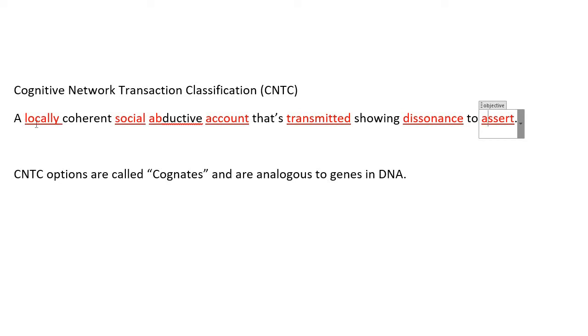So this here is like a string of DNA and these red areas here are like genes. They can have a role, but how they actually decide to do that role is determined by that gene. So the cognitive network transaction classifications, the options are called cognates. Now, I've spoken with Michael and he said cognates has got another word for it, so we'll have to think of it. And it's analogous to DNA.